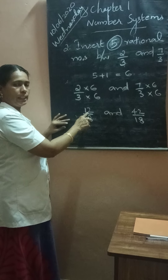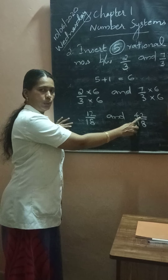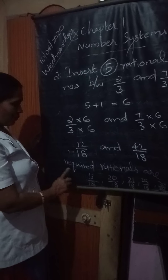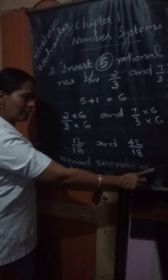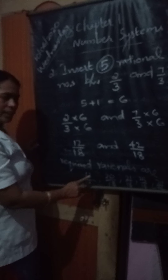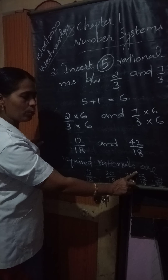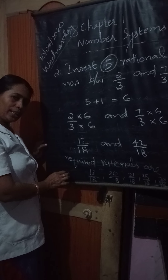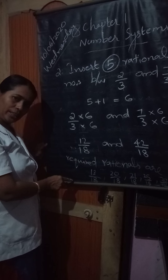Go through your numerators — numerators are 12 and 42. You can insert any number as you like; we need only 5. So the required rational numbers are 13 by 18, 20 by 18, 21 by 18, 25 by 18, and 30 by 18. You already studied the method — you can follow your own method, or otherwise follow this method.